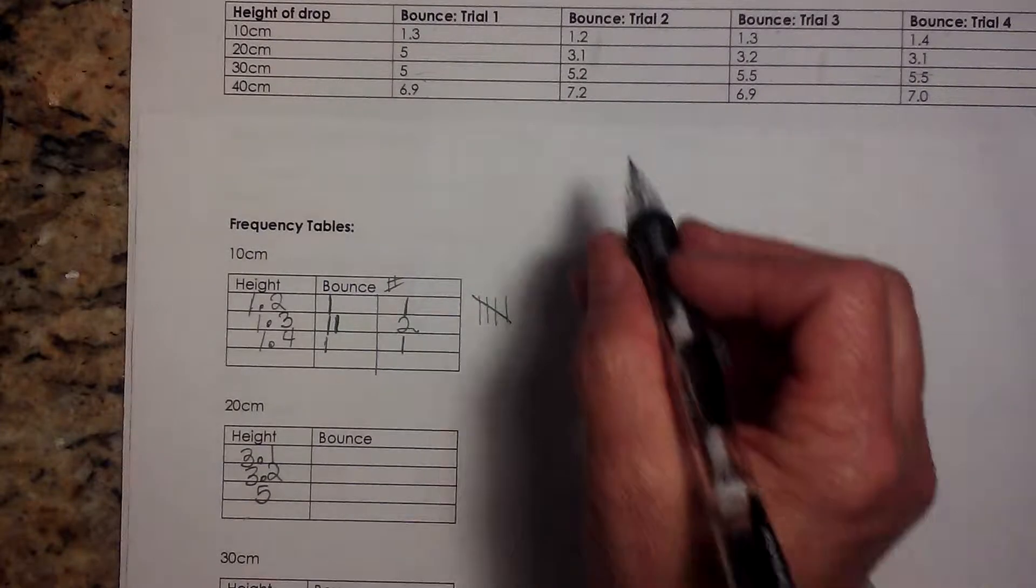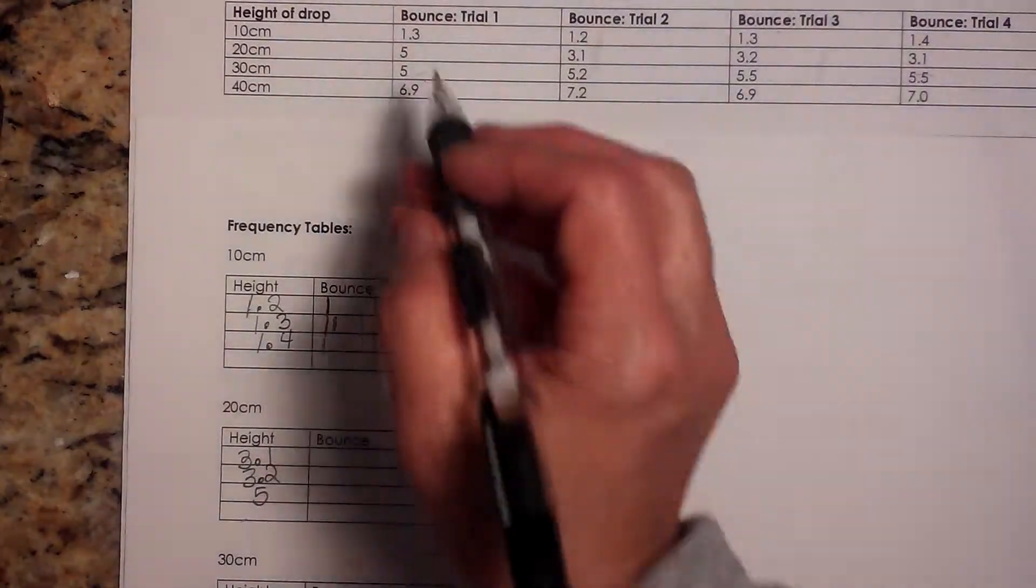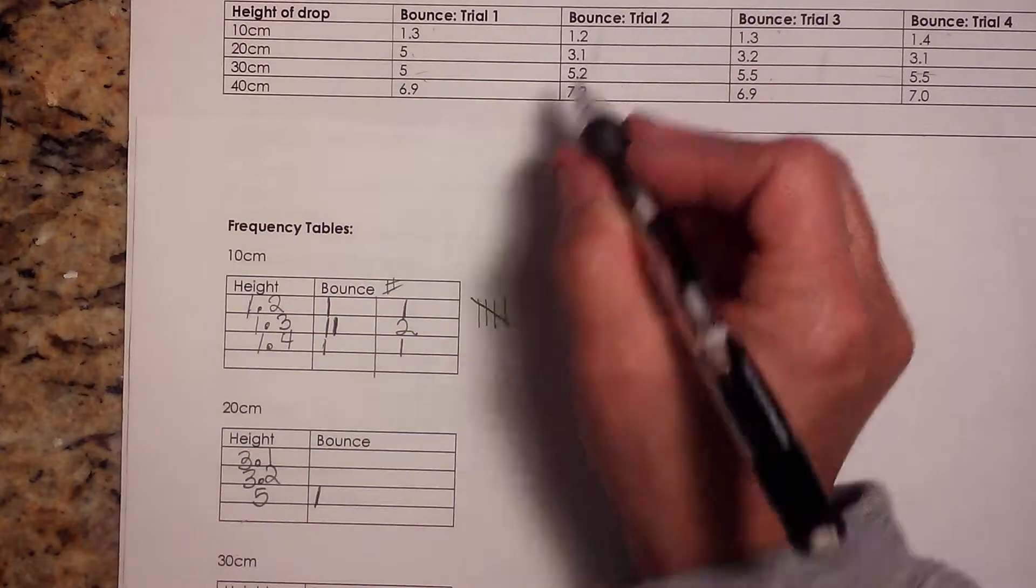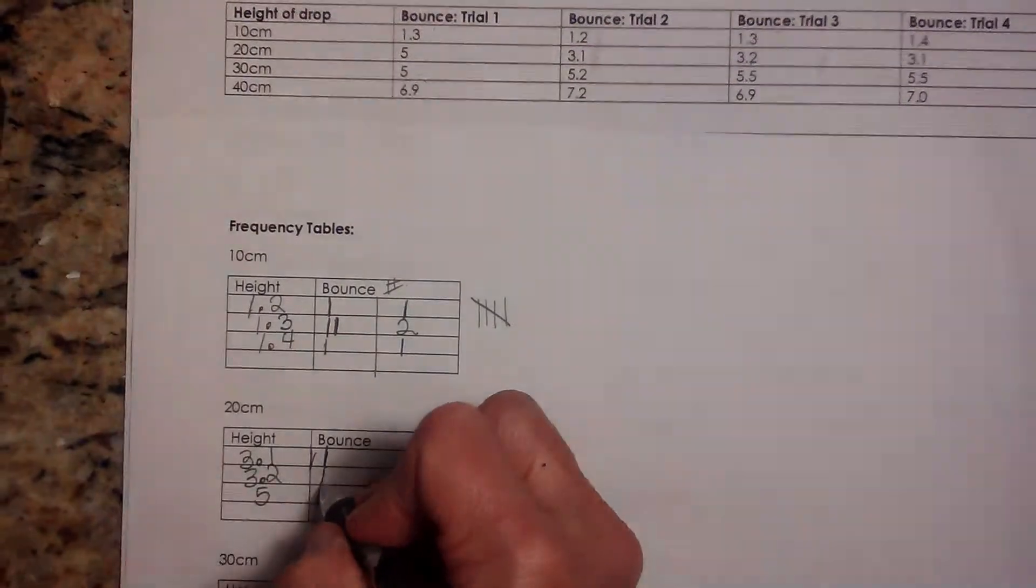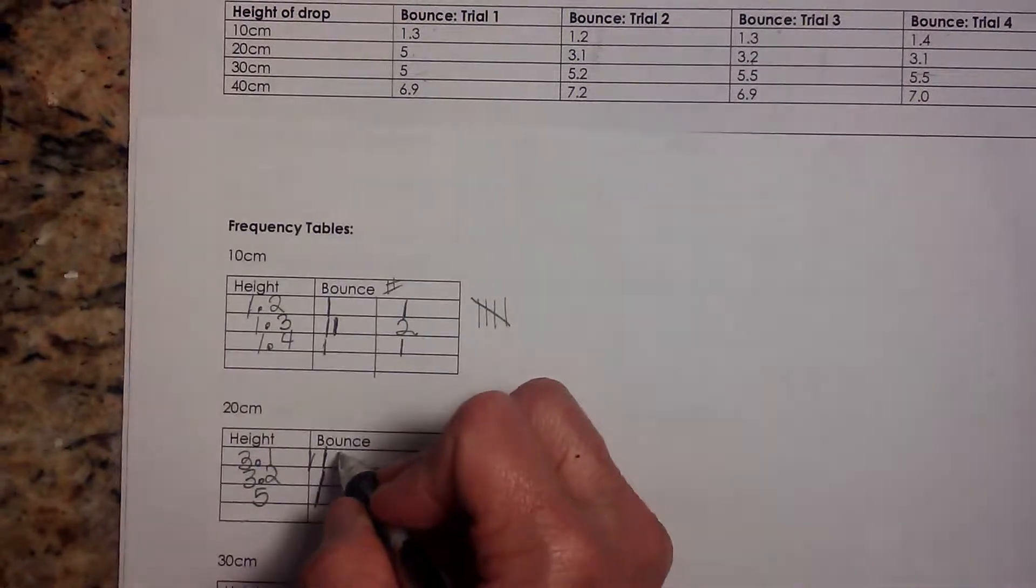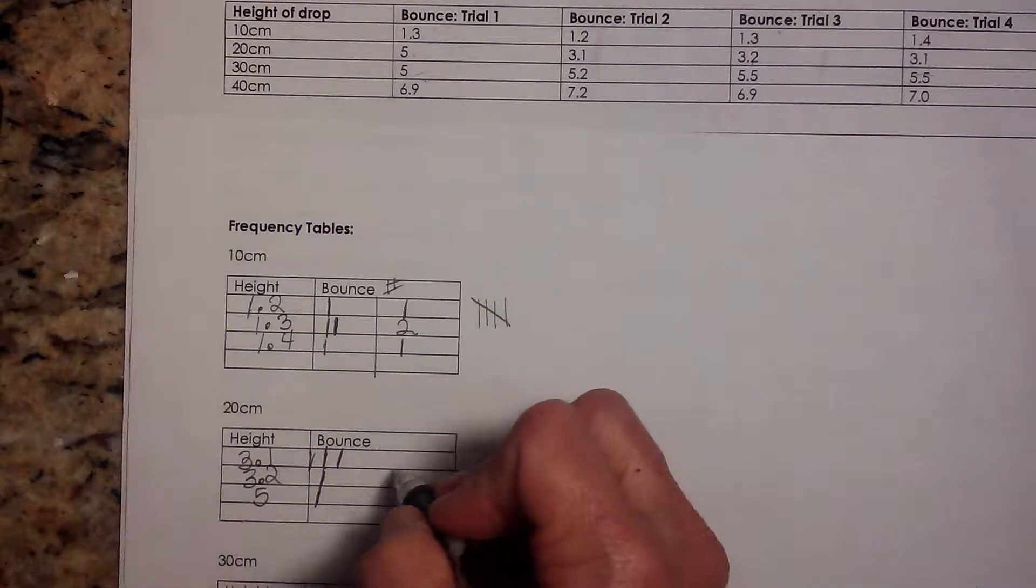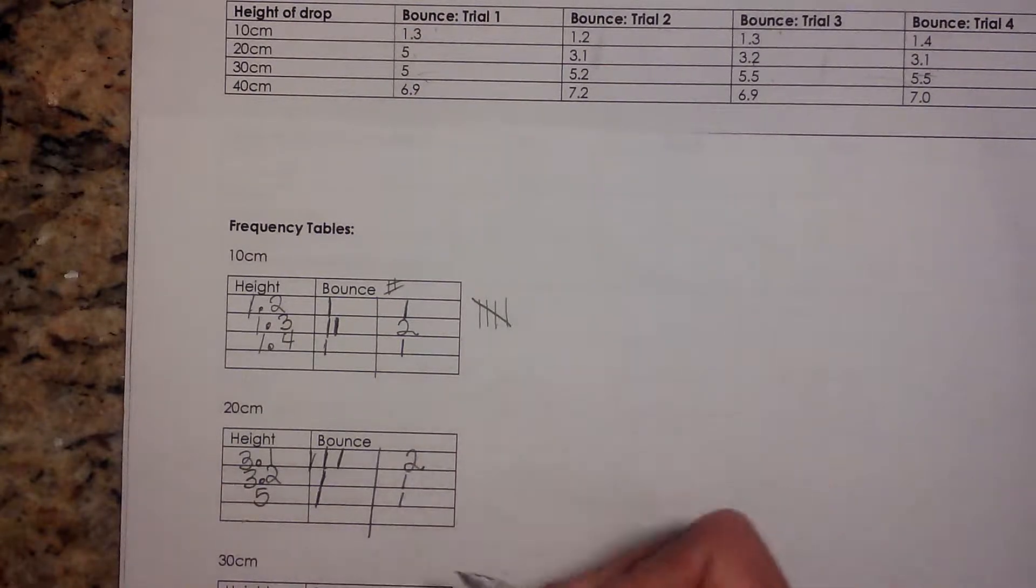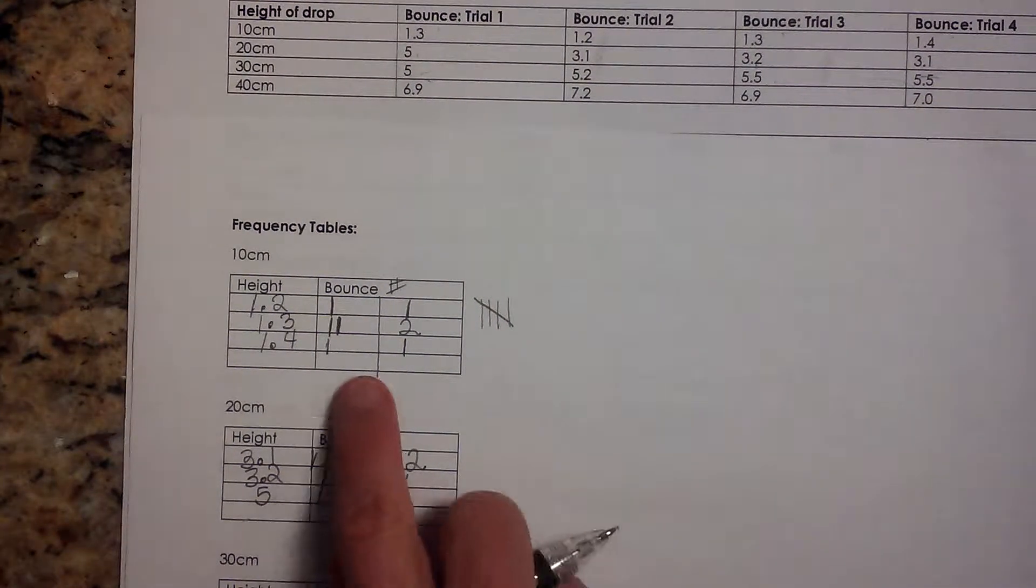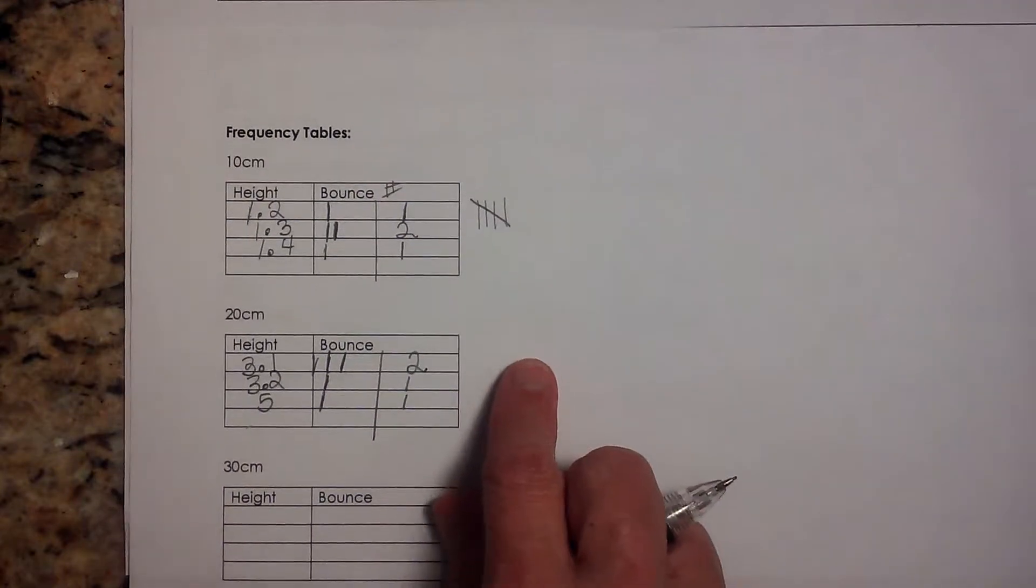So let's make our tally marks. We have 1 at 5. The next one is 3.1. The next one is 3.2 and the next one is 3.1. So there are our tally marks. Now let's total them up. 2, 1, 1. So there we go. There's our tally mark and there's the total for our frequency table.